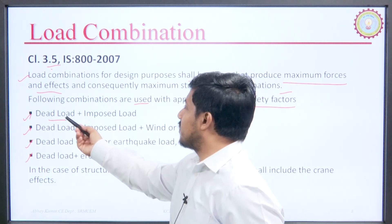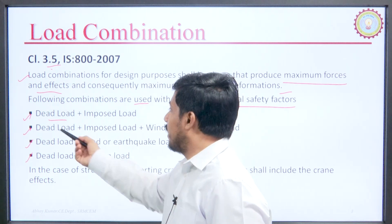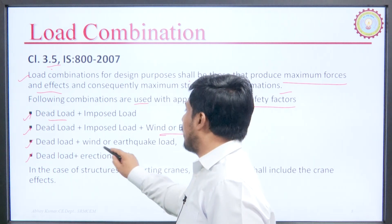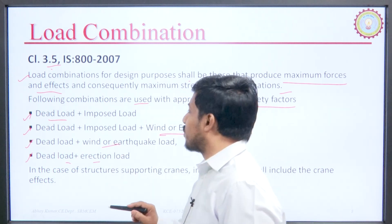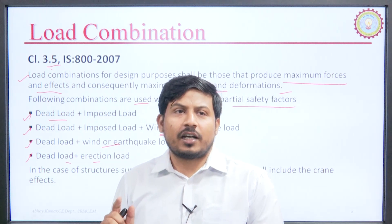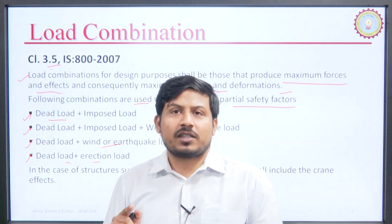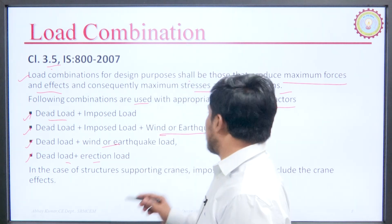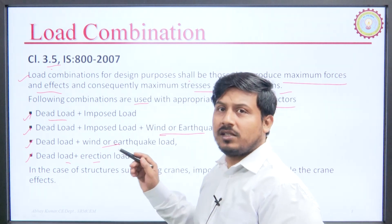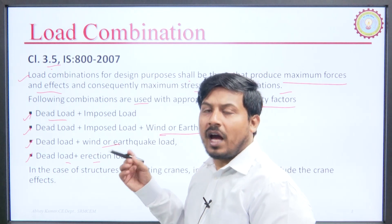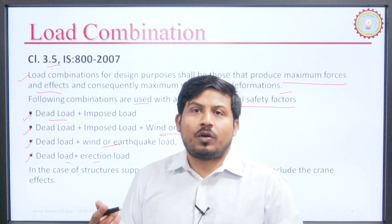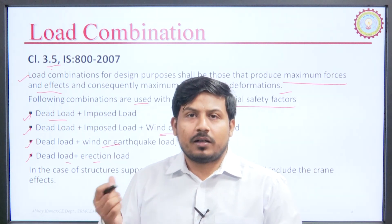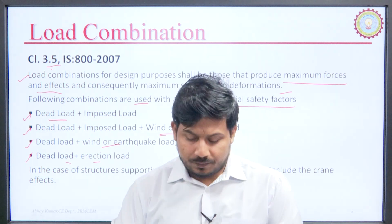The IS code suggests the following combinations: first, dead load and imposed load; second, dead load, imposed load, and wind or earthquake load; third, dead load and wind or earthquake load; fourth, dead load and erection load. Two things to observe: dead load is always present, and wind or earthquake load means either wind or earthquake — not both simultaneously. This will be discussed further in the next lecture.